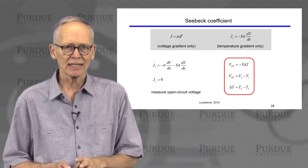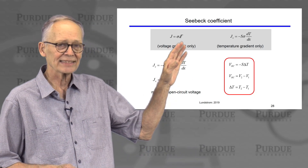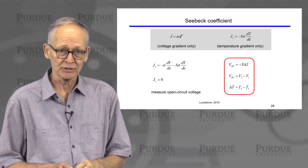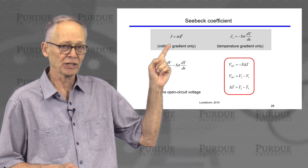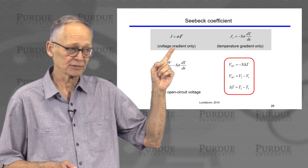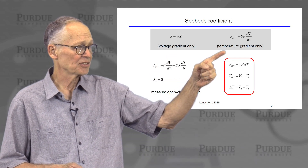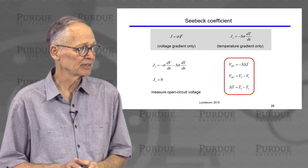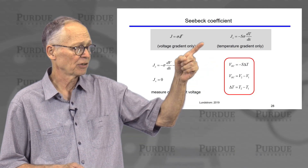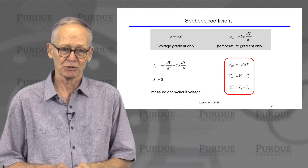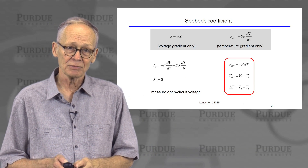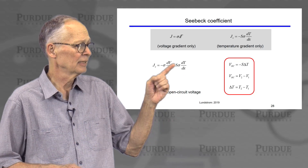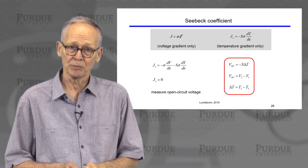Let's look at that a little more closely. In the last section, we assumed there was no temperature difference and the current was proportional to the electric field. In this section, we assumed there was no electric field — no voltage difference — and we have an expression for the current in terms of the temperature gradient. In general, we have both an electric field and a temperature gradient, so the total current is the sum of the two.